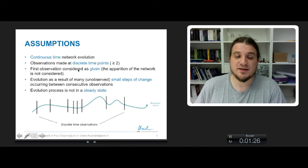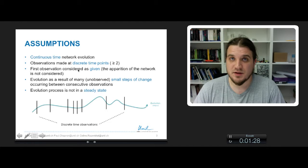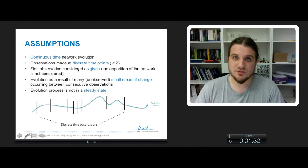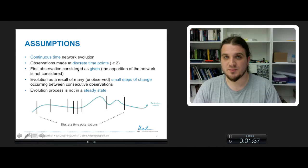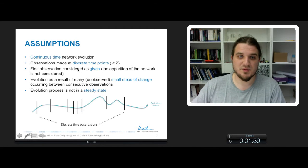And the first observation is always considered as given, because network evolution doesn't deal with apparition, formation, emergence of the network, only the evolution from a time t0 to another time in the future.